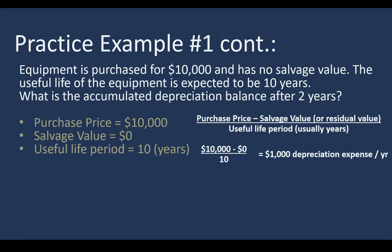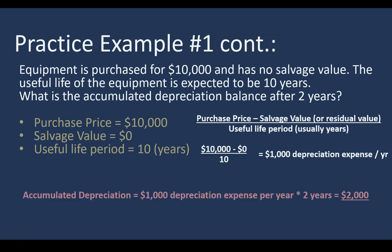Recalling our practice example from the first lecture, we're using the same fact pattern here. The calculation of depreciation expense is exactly the same as we went over in the first lecture. Here we've calculated the depreciation expense for this equipment at $1,000 per year. The question is asking us: what is the accumulated depreciation balance after two years? So we've placed this asset in service and two years has passed. It's as simple as taking the annual depreciation expense of $1,000 times two years since the asset has been in service for two years.